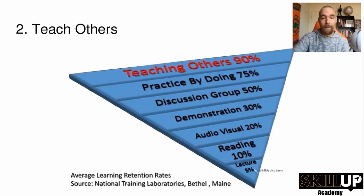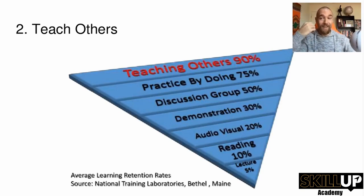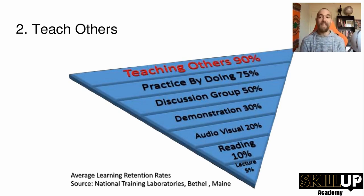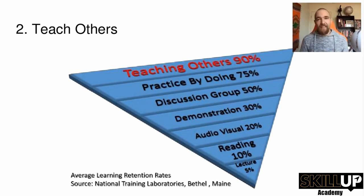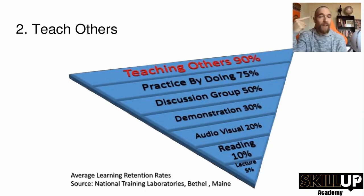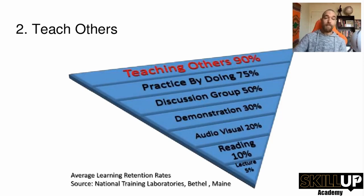Tip number two: teach others. If you go to a lecture, you actually only retain about 5% of what you learn — that's the bottom of the inverted pyramid of learning. That's how we learn in school: a teacher tells you what you should do and how to do things. What you really should be doing is whenever you get information, think about how you would teach it to others.